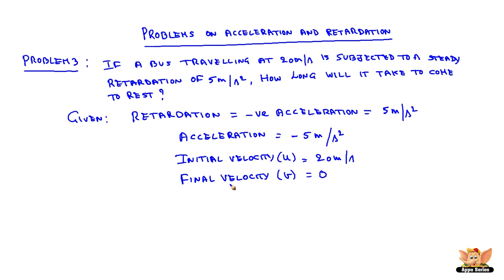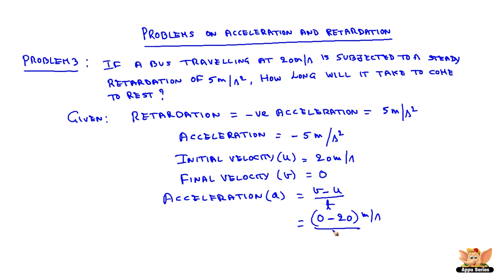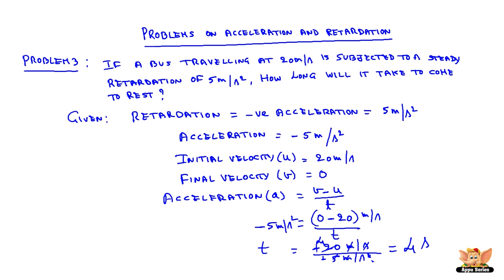Let us find out how much time it takes to come to rest. Acceleration is given by v minus u by t. In this case, v is 0 and u is 20 meters per second, t is unknown, and a is minus 5 meters per second square. Then t equals minus 20 meters per second divided by minus 5 meters per second square. The negatives cancel, giving 20 by 5, which is 4 seconds. Therefore, the time taken for the bus to come to rest is 4 seconds.